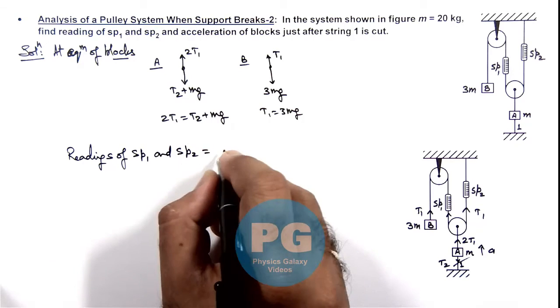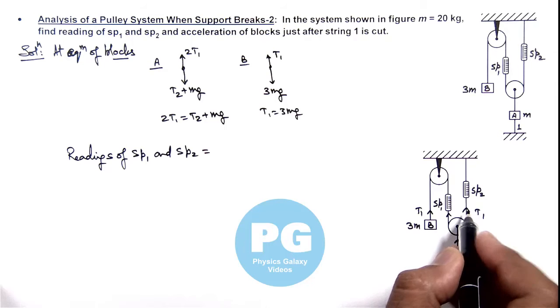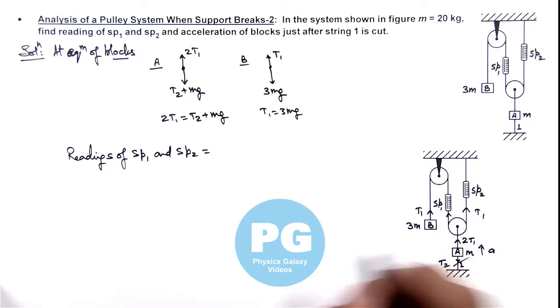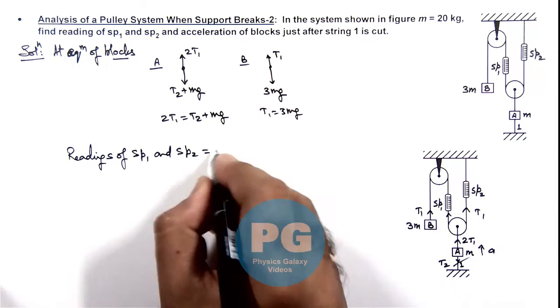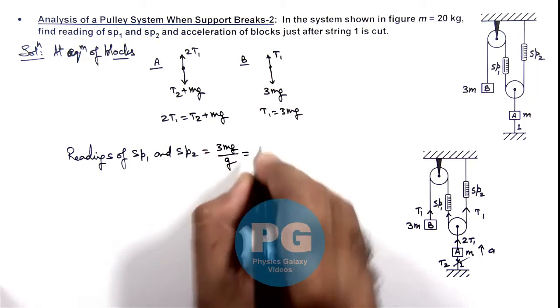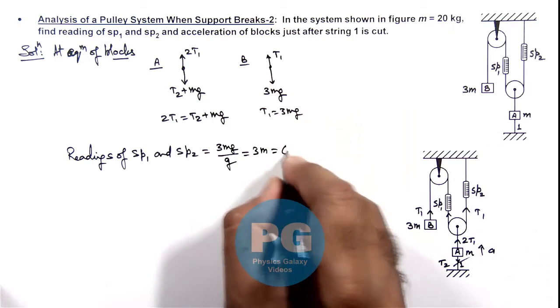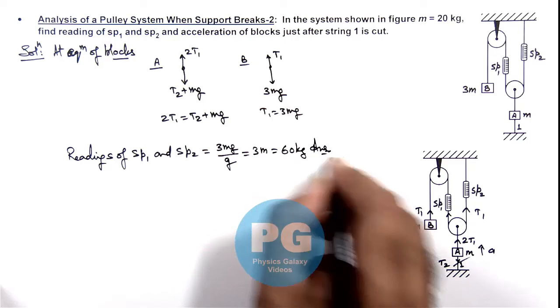Is equal to, this will be T1 which is measured in terms of g, so we can simply write this is 3mg divided by g. That will be 3m, and the value of m is given as 20 kg, so this is 60 kg. That will be one answer for the problem.